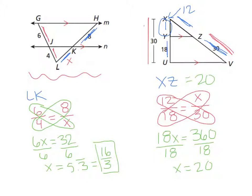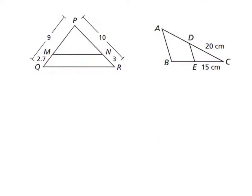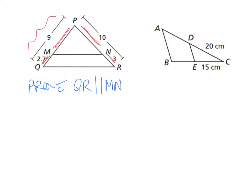That's applying the triangle proportionality theorem. There's also a converse: if the ratios are the same, then those lines are parallel. Here we want to prove that QR is parallel to MN. The ratios of the sides QM over MP and RN over PN would need to be the same. We know the whole side is 9 and the smaller part is 2.7, so the other part is 6.3.